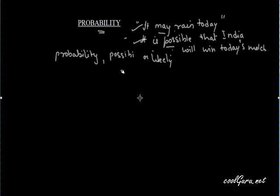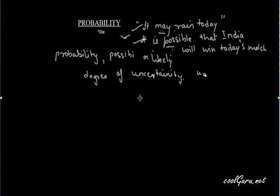When we use words like probability, possibility, or likely, there is always uncertainty about whether an event will happen or not. We measure this degree of uncertainty with the help of probability. So, probability is the chance of happening of some event where we are not sure whether that event will happen or not.